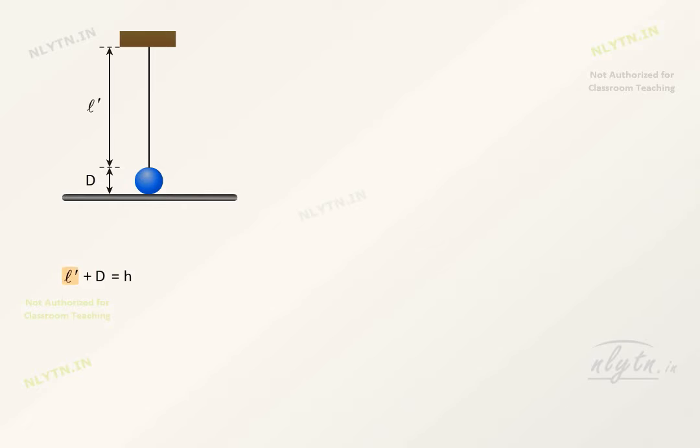Here we can write the stretched length equal to the unstretched length plus the extension in the wire. Thus we can say that extension in the wire will be equal to this term. Substituting values, we get this to be equal to 1 cm.